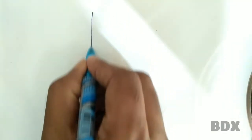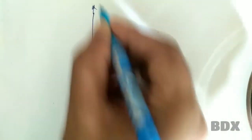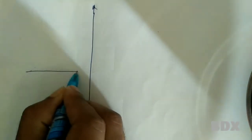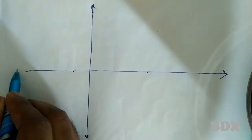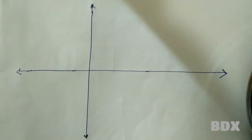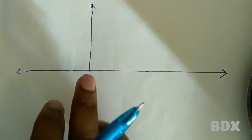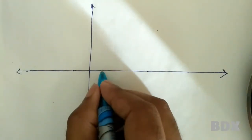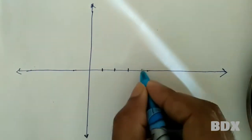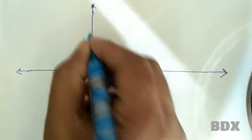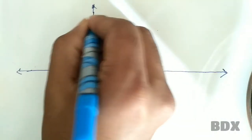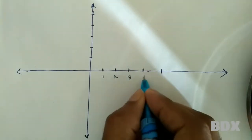Now we are going to draw the Cartesian coordinate system. The value of x goes from 0 to 4 — 1, 2, 3, 4, 5 — and y goes from 0 to 5 — 1, 2, 3, 4, 5.